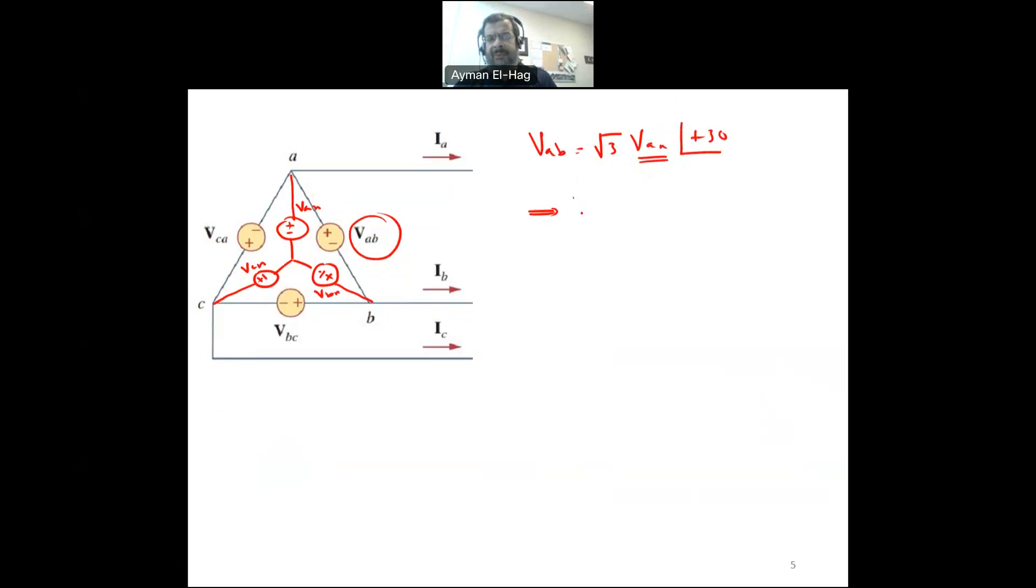So I want VAN, so my VAN will equal to the VAB divided by root 3 and an angle of minus 30. So the phase voltage is equal to the line-to-line voltage divided by root 3 and the phase shift of minus 30.